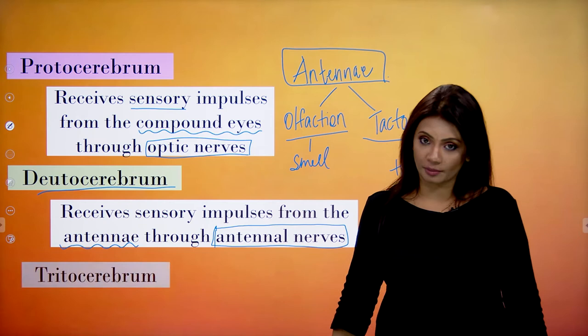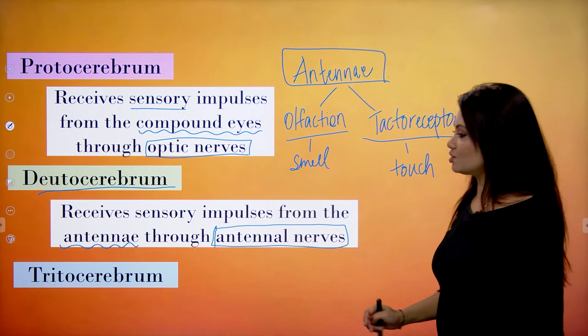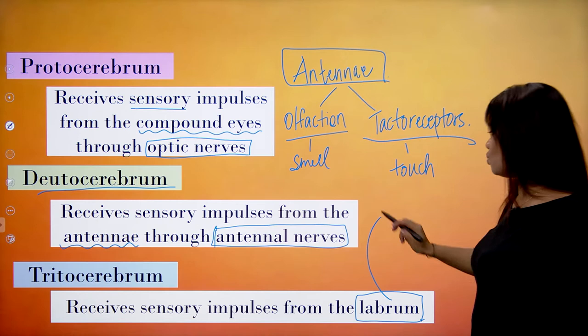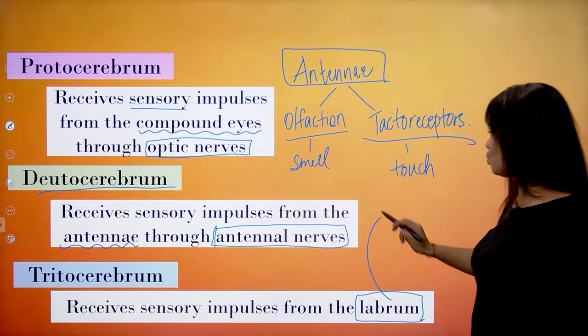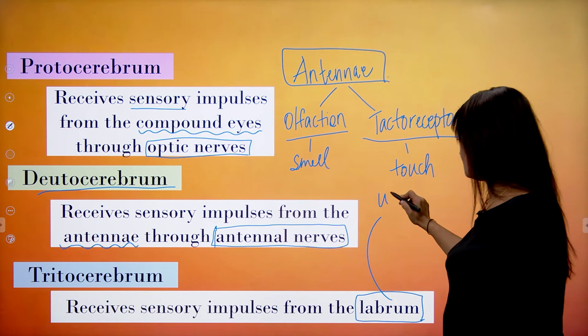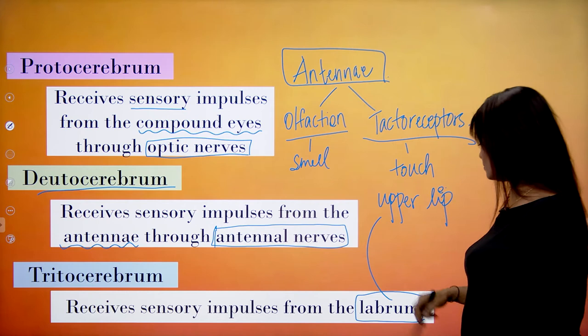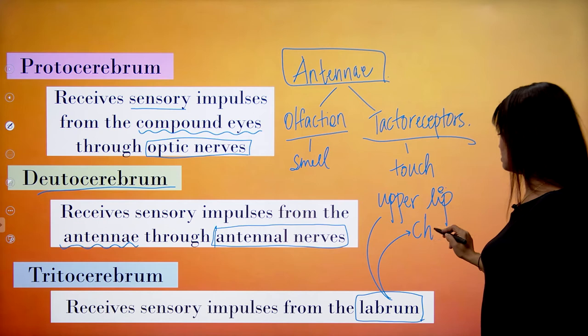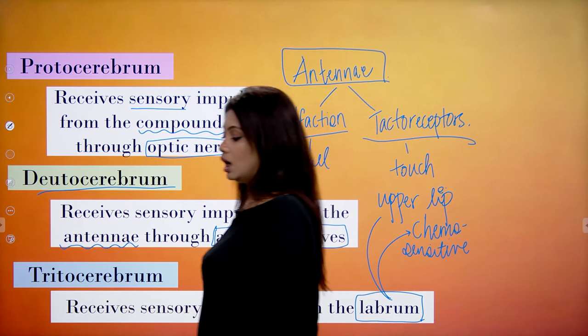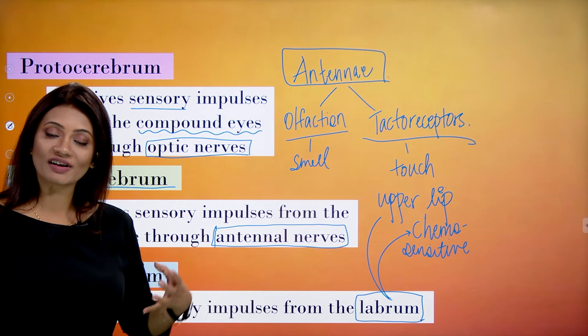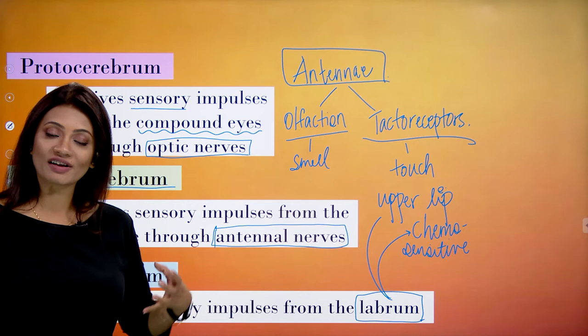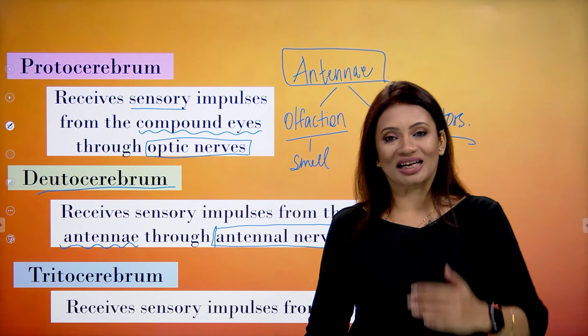The third part of the brain, the tritocerebrum, receives sensory impulses from the labrum — the upper lip. The labrum is chemosensitive, having chemical sensations that let the cockroach know whether a substance in front of it can be eaten. These are the different sensory functions the brain perceives, which is why we say the brain is a sensory organ.